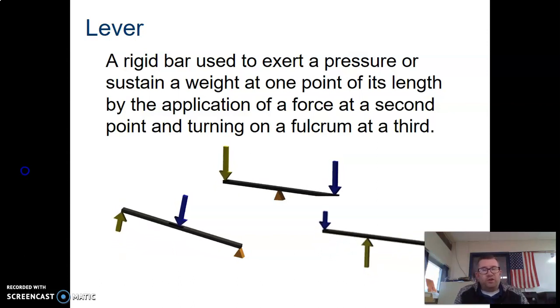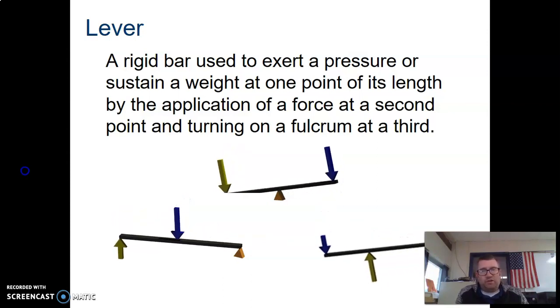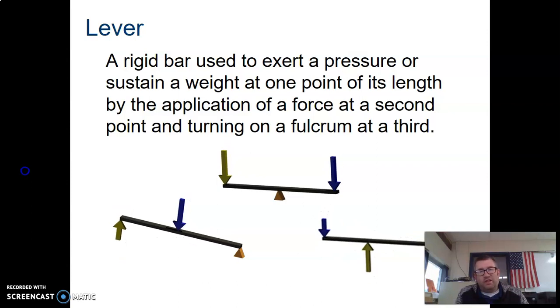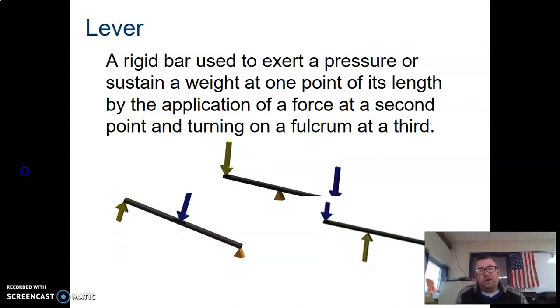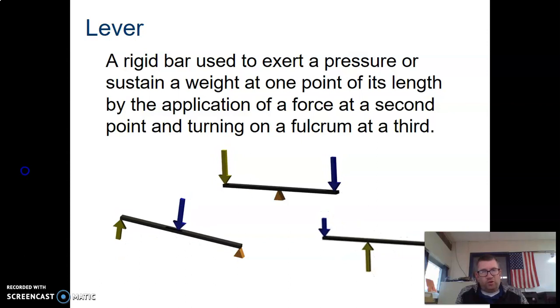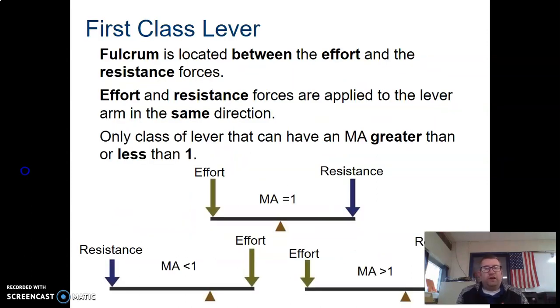Lever, rigid bar used to exert a pressure, sustain a weight at one point of its length by the application at a second point in turning on a fulcrum. Here you have three kinds of lever, we call those first, second, and third class lever. It all depends on where the effort and resistance forces are in relation to the fulcrum. First class lever, fulcrum is located in between the effort and resistance force. It doesn't have to be exactly in the middle, it can be tilted towards one side or the other, thinking like a crowbar, something like that, or a seesaw.